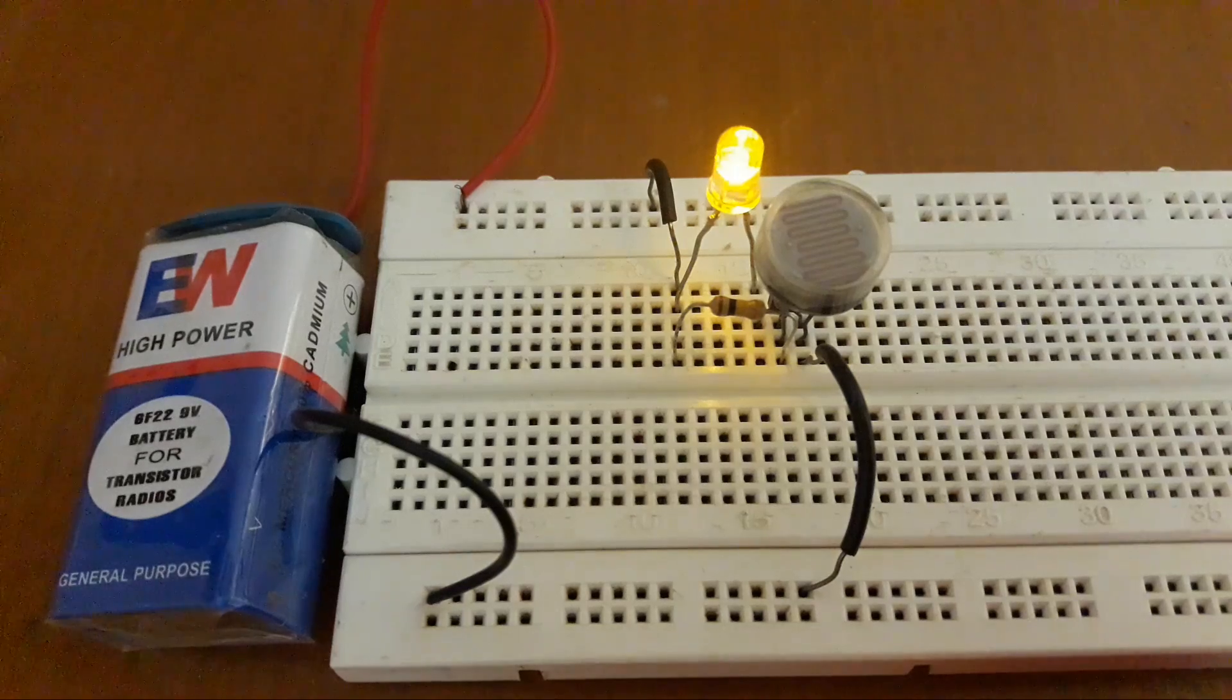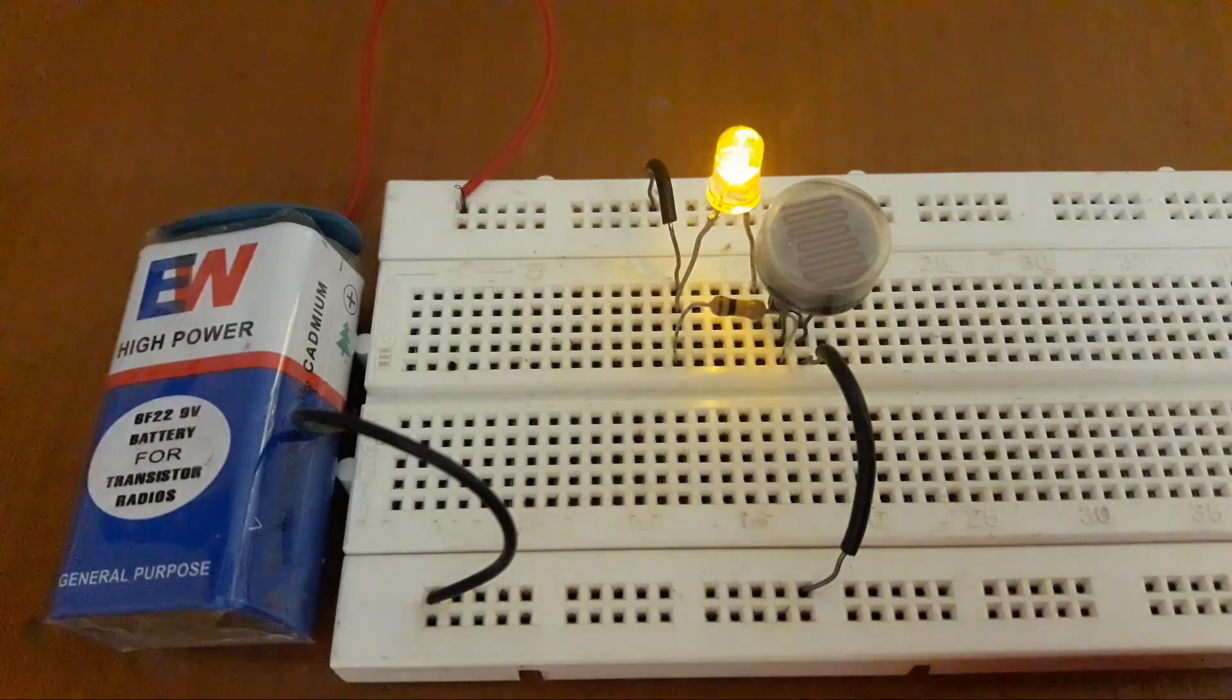A dark sensor is basically a sensor which senses the presence of darkness and the LED comes on. When there is light, the LED goes off.